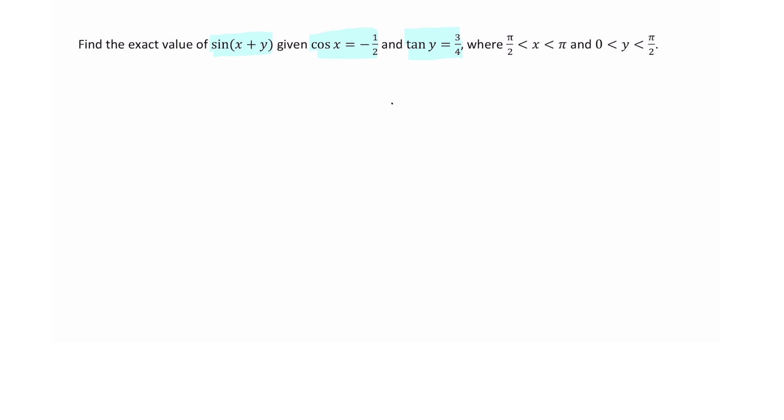Where angle x is between pi over two and pi, meaning that it terminates in quadrant two, and y is between zero and pi over two, meaning that it terminates somewhere in quadrant one.